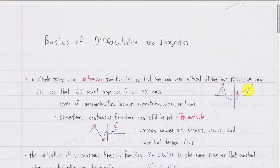We can also say that for a continuous function, when we're taking the limit of delta y over delta x, as delta x approaches zero, then delta y must approach zero as well.